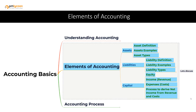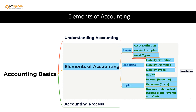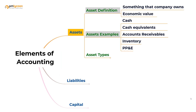There are three elements that we need to understand: assets, liabilities, and capital. Let us start with assets. We will understand what an asset is, and I'll give you some examples and discuss the different types of assets. So what is an asset?